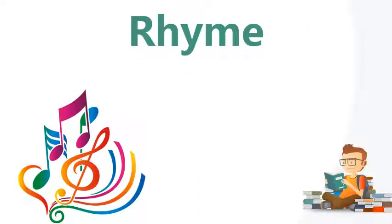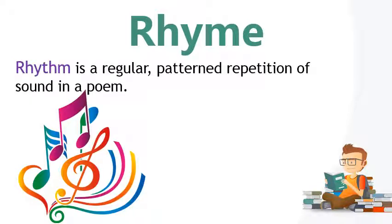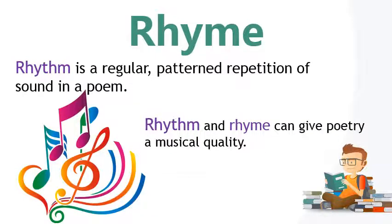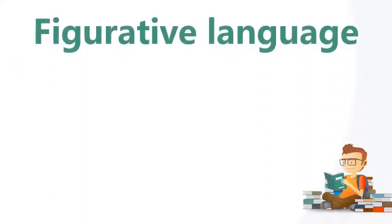Then we get rhythm. Rhythm is a regular patterned repetition of sound in a poem — it's like when we sing a song, that is the rhythm. Rhythm and rhyme can give poetry a musical quality. If you take the lyrics of a song and extract them, sometimes you will see at the end of each line the words rhyme.